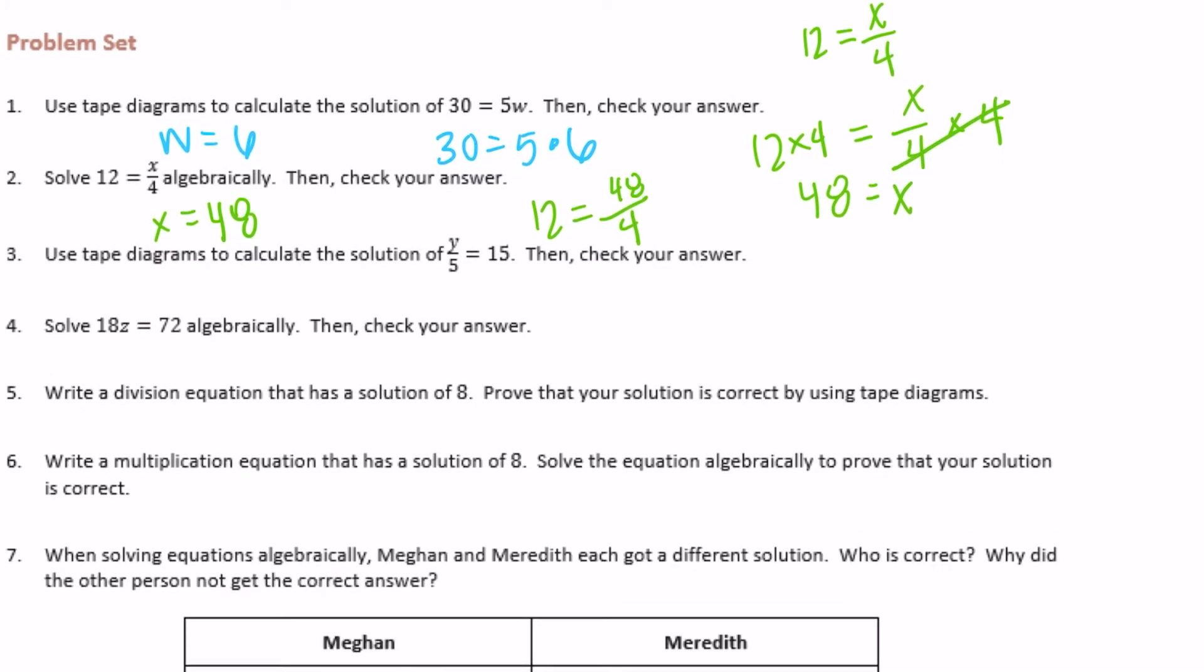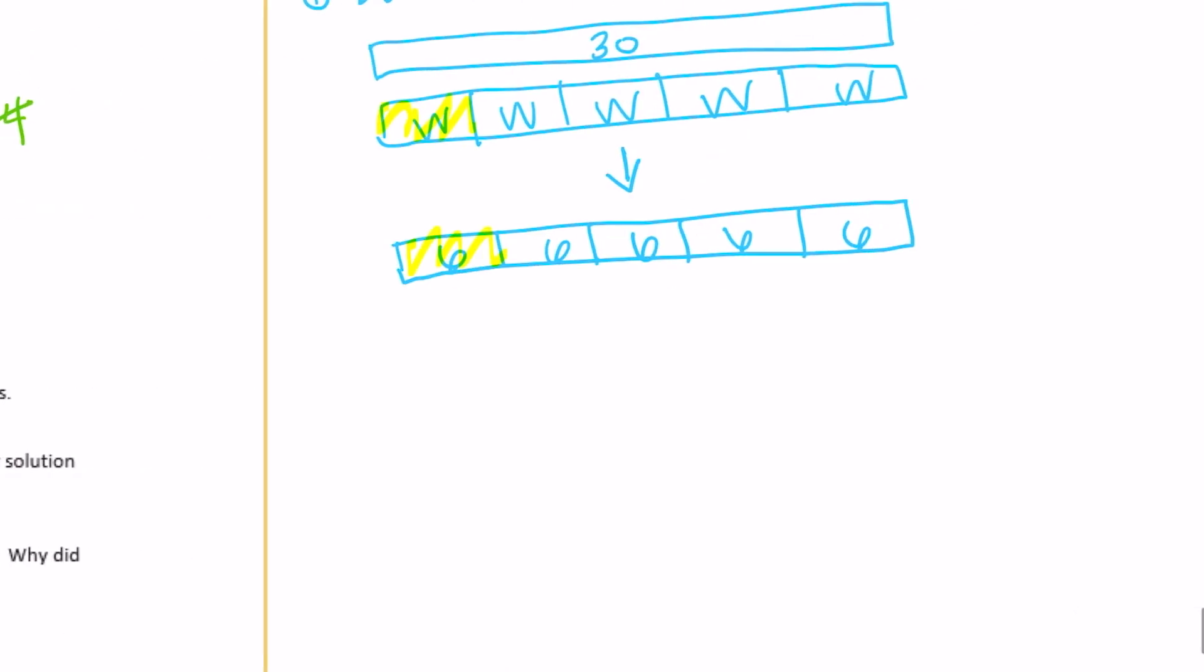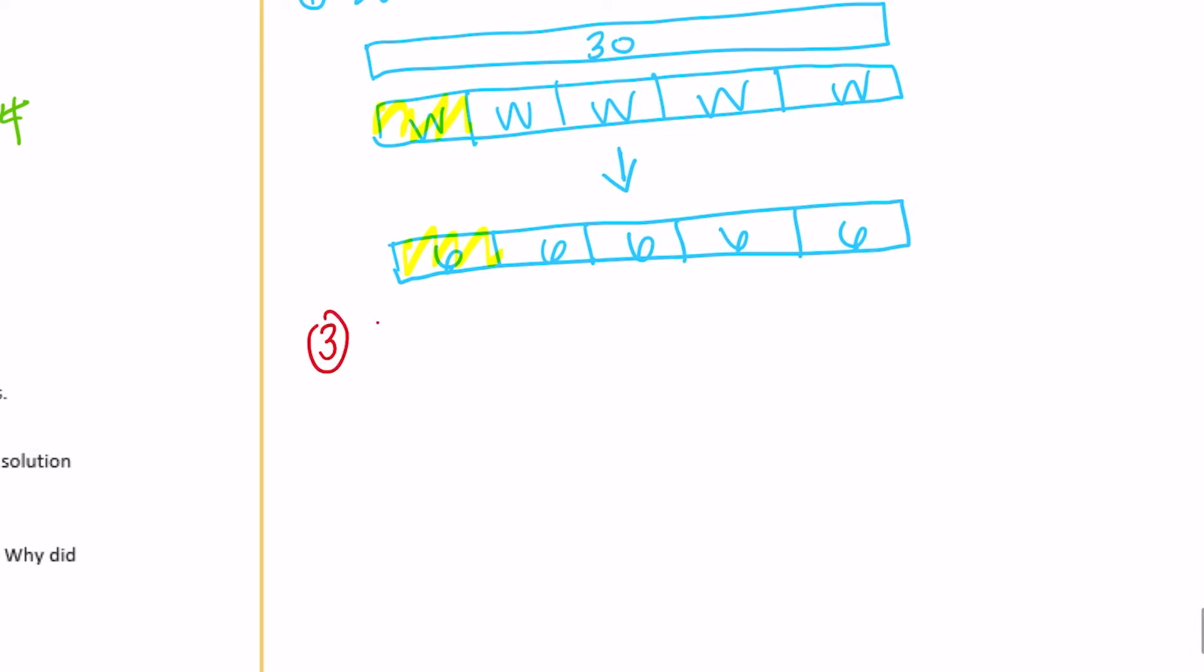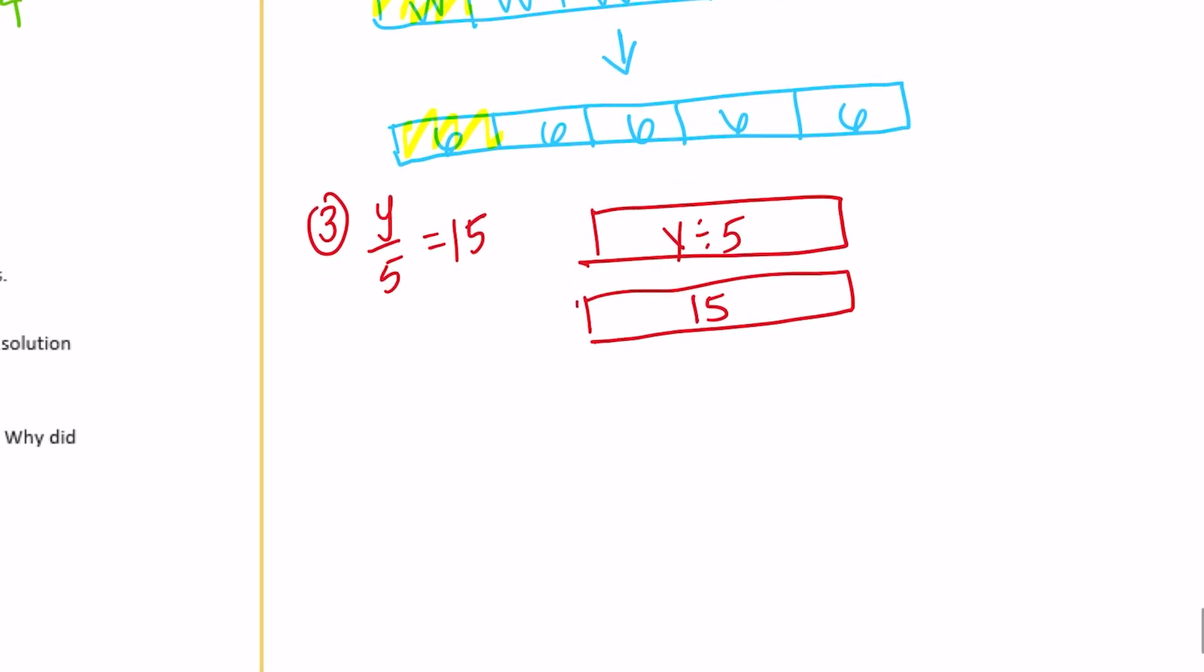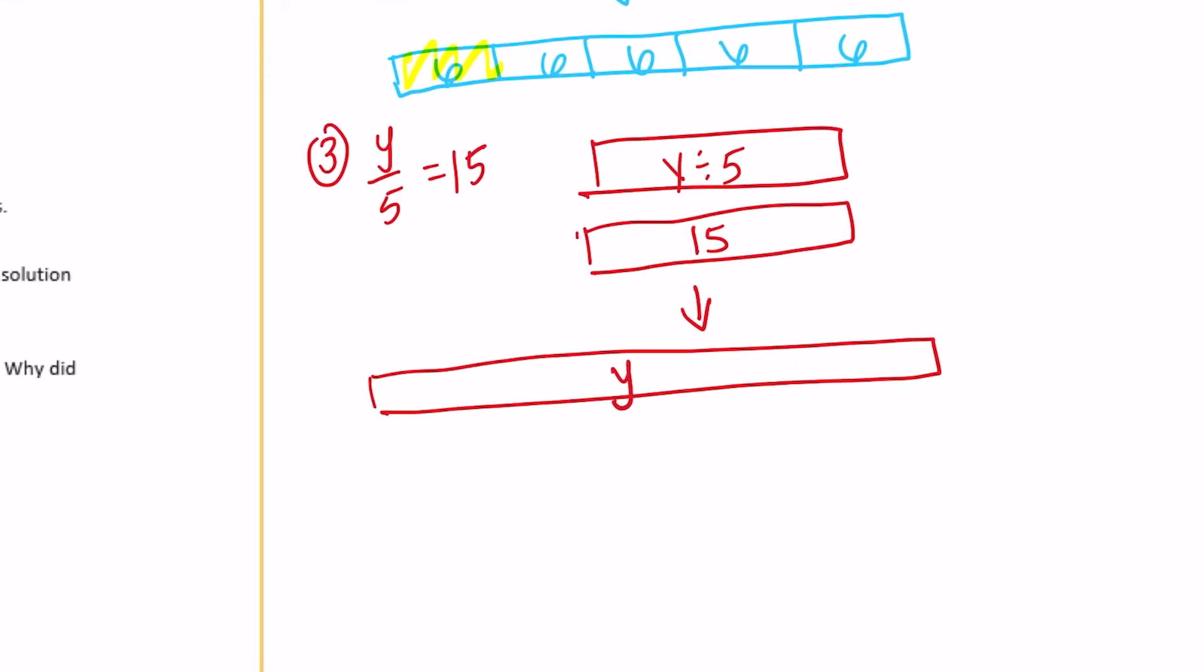Number 3, use tape diagrams to calculate the solution of y divided by 5 equals 15. So this is number 3, y divided by 5 equals 15. So I'll draw two tape diagrams. We'll have y divided by 5, and then it's equal to 15. So what we could do is we'll get three pieces here. So we have y, and then we have y divided by 5. And there's going to be five of them.